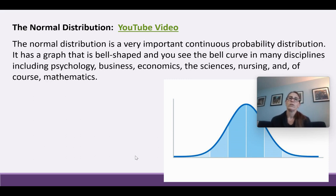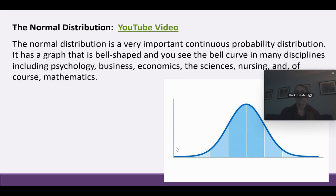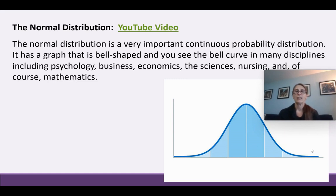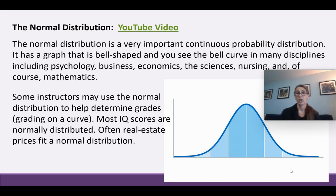The normal distribution is bell-shaped and we see it across many disciplines — psychology, business, economics, sciences, nursing, and math. Some instructors use the normal curve to help determine grades, which is what we mean by grading on a curve. IQ scores are also normally distributed, and real estate prices often fit a normal distribution as well.